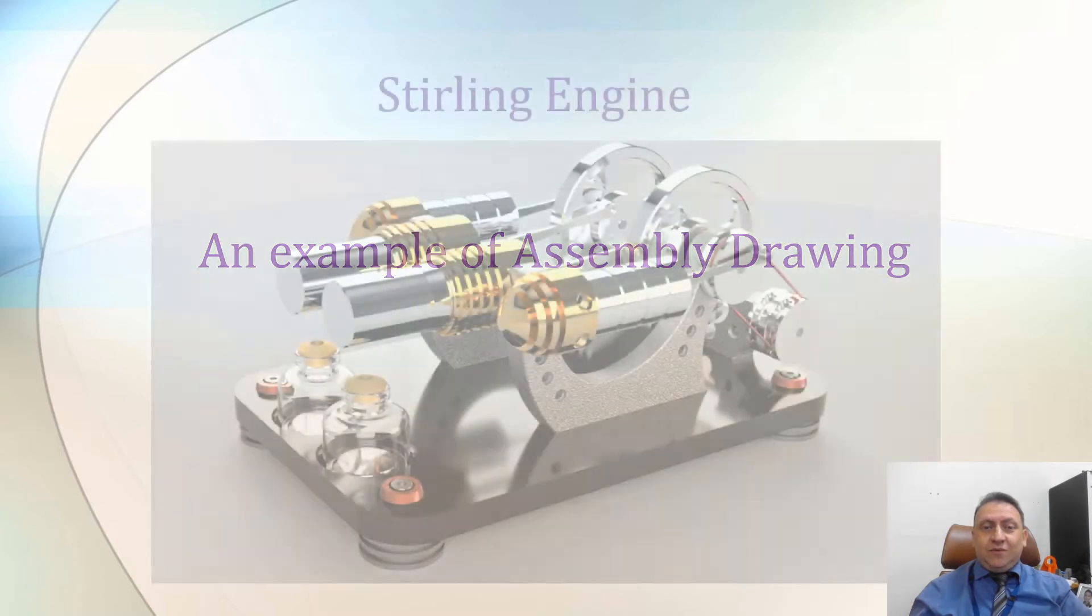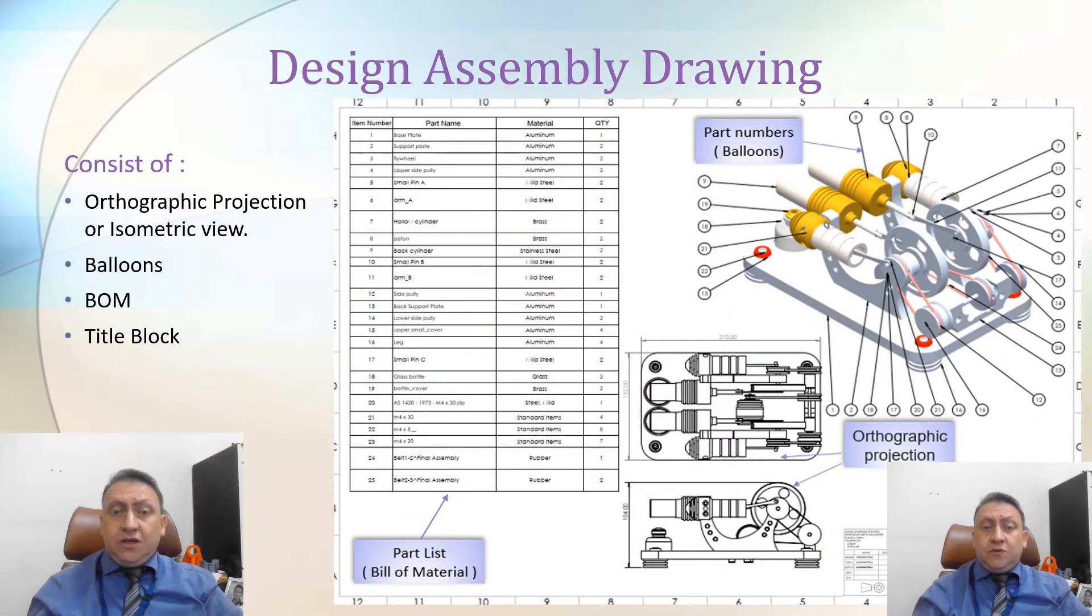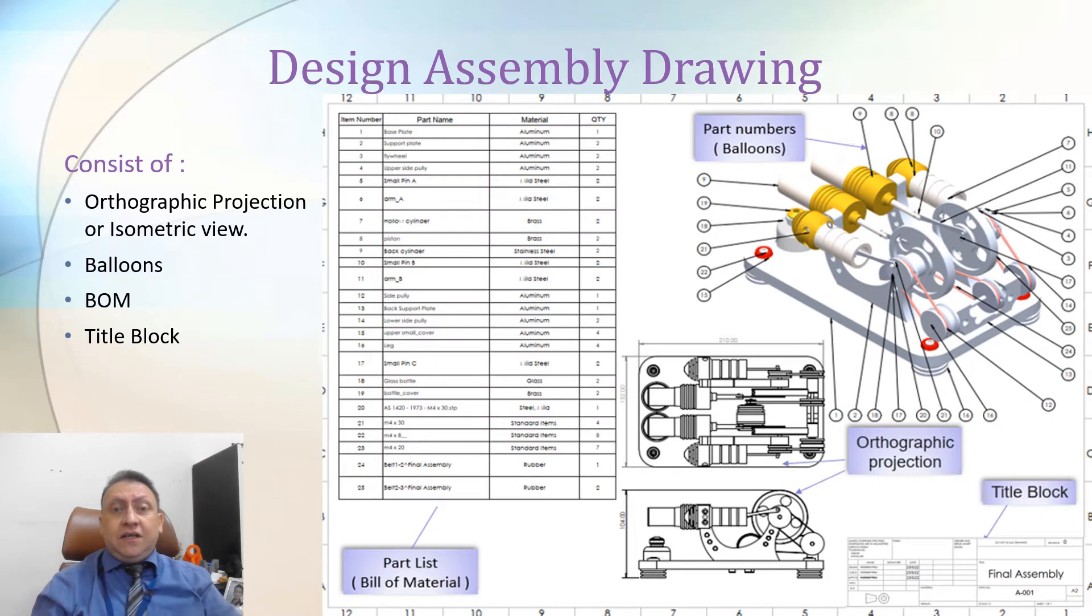Good example for assembly drawing is this 3D model of sterling engine. This assembly 3D model. If you want to have a look for assembly drawing as engineering drawing, we have to look to this design assembly drawing. For this design assembly drawing, we can see that the main elements to make this excellent assembly drawing, successful assembly drawing.